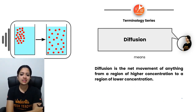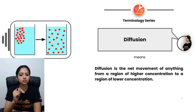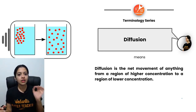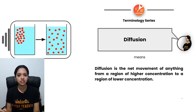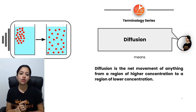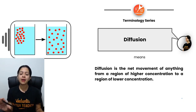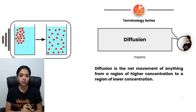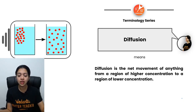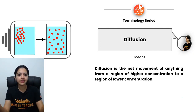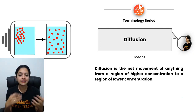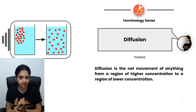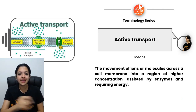Diffusion is the net movement of anything from a region of higher concentration to a region of lower concentration. There is no semi-permeable membrane involved — that applies only in osmosis. Diffusion can range from gas diffusion to a drop of ink diffusing across an entire beaker of water until it's evenly colored.